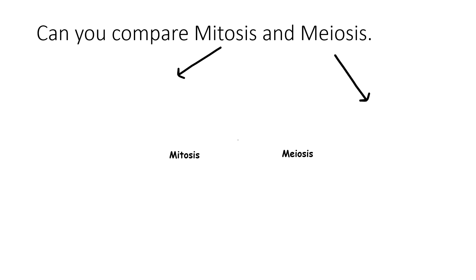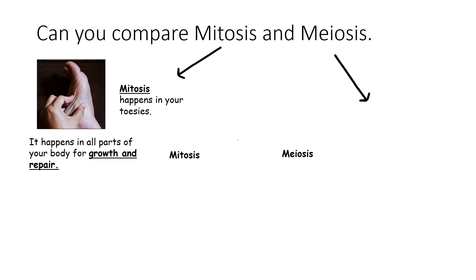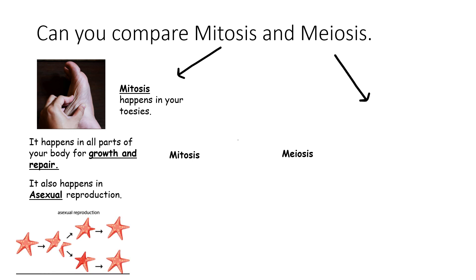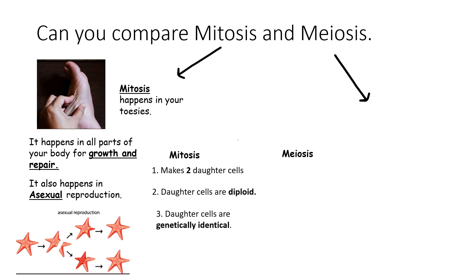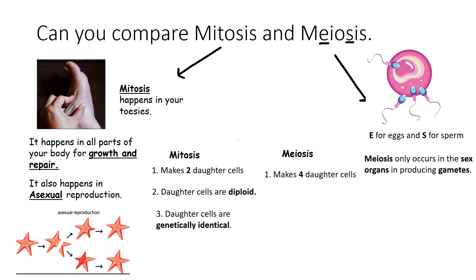An important thing is you will have to be able to compare mitosis and meiosis. For mitosis, it happens in your toesies — a bit silly, but it happens in any part of your body, including your toes. It happens everywhere and it's for growth and repair. It also happens in some plants and organisms in asexual reproduction. The main three points: it makes two daughter cells, they're both diploid, and they're genetically identical. Meiosis only happens in the sex organs to produce gametes — remember the E and S in meiosis for eggs and sperm. It makes four daughter cells compared to two, it makes haploid cells compared to diploid, and they're not genetically identical.